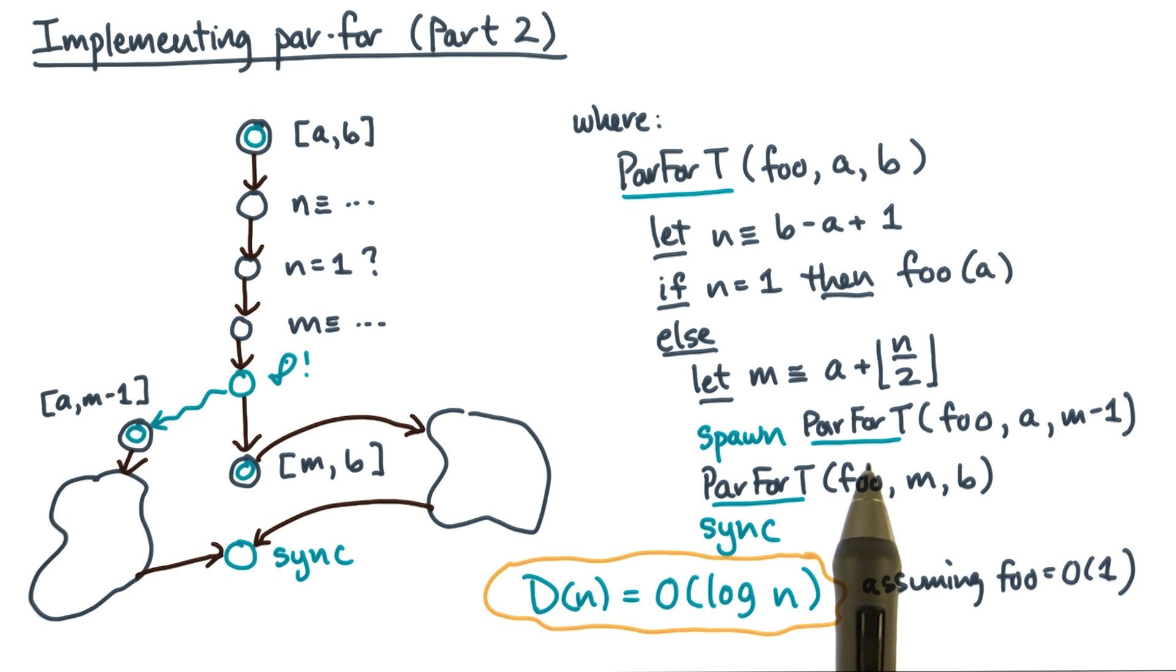Now what I've just given you is a much more realistic way to implement a parallel for loop. So what I want you to do from now on is to assume this implementation. That means if I tell you that the loop body of a par4 has constant cost and I ask you what the span is, the span will be log n.